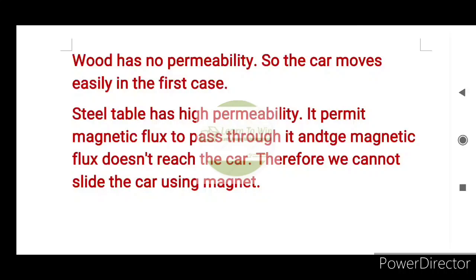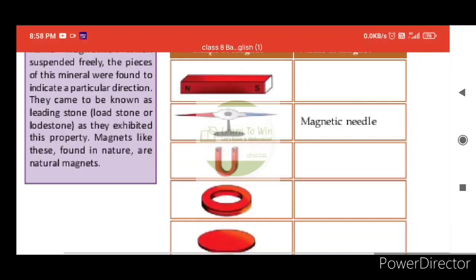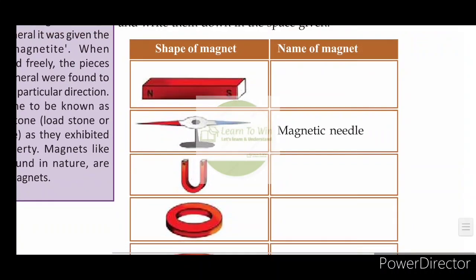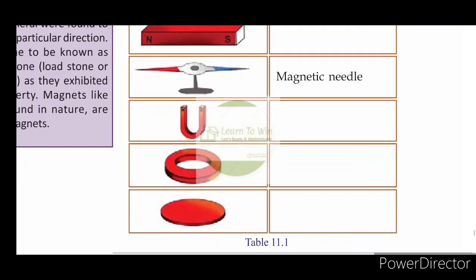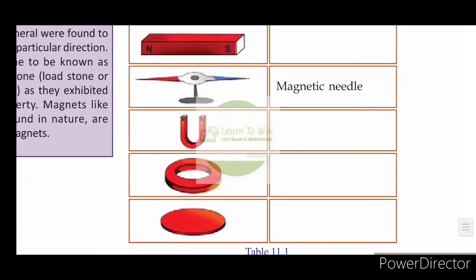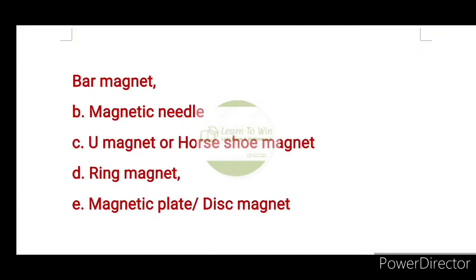The horseshoe magnet is a U magnet. A ring magnet is a disc magnet. The magnet types include a magnetic needle, a horseshoe magnet, a magnetic plate, and a disc magnet.